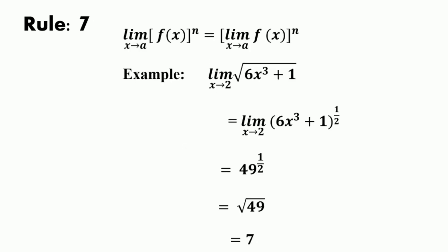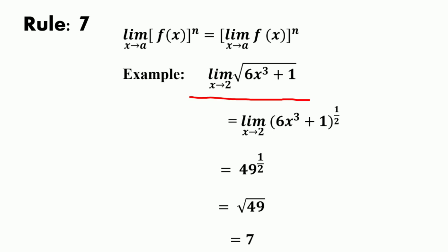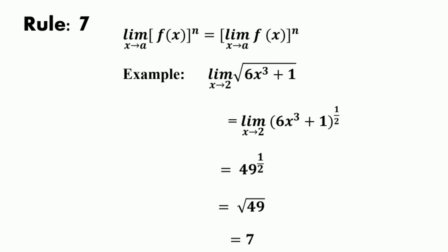The next rule states that the limit of [f(x)]^n as x approaches a equals [limit of f(x) as x approaches a]^n, where n is any real number — positive, negative, integer, fraction, irrational, or zero. For example, the limit of √(6x³+1) as x approaches 2 can be rewritten as the limit of (6x³+1)^(1/2), which gives 49^(1/2) = √49 = 7.